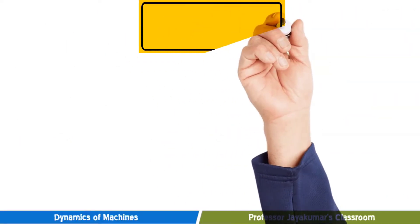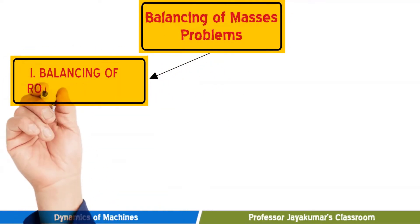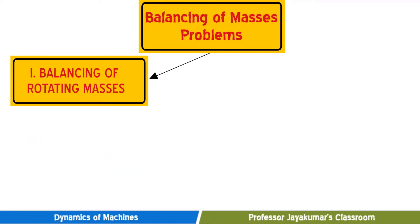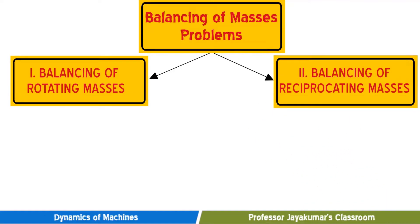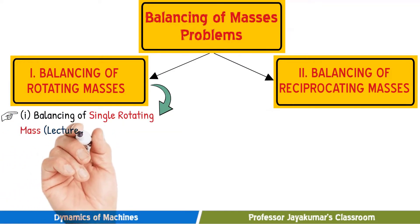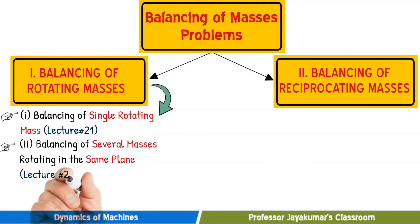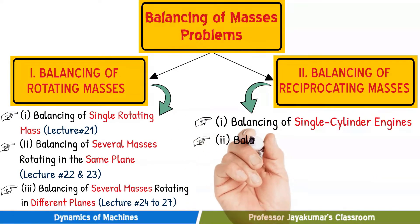Balancing of masses problems can be broadly classified under two groups: one is balancing of rotating masses, and the other is balancing of reciprocating masses. Under balancing of rotating masses, we have already discussed balancing of a single rotating mass, balancing of several masses rotating in the same plane, and balancing of several masses rotating in different planes, from lectures 20 to 27.